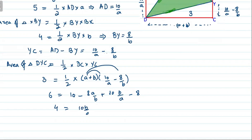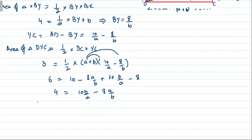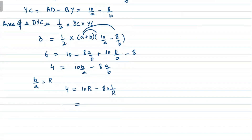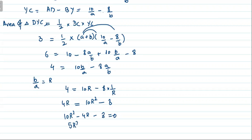Let R = B/A. Then 4 = 10R − 8/R. Multiplying through by R: 4R = 10R² − 8, which gives 10R² − 4R − 8 = 0. Dividing by 2: 5R² − 2R − 4 = 0.